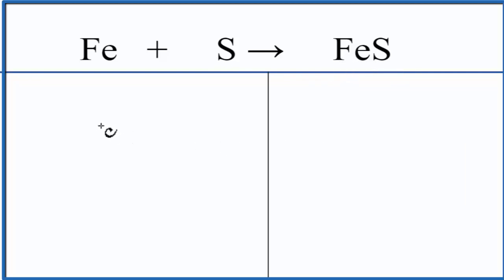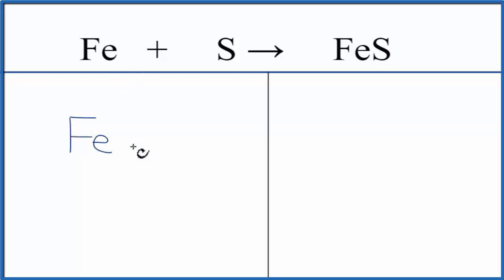Let's add the atoms up on each side of the equation. We have Fe, that's iron, and it's not written there, but we assume there to be a one, so we only have one iron atom. Sulfur, same thing, we have one of those.